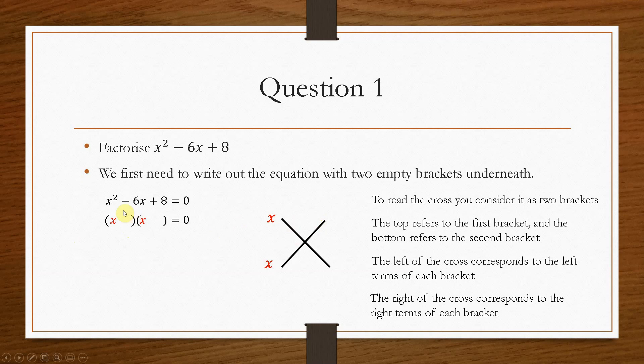In this case, we need two numbers which will multiply to give you plus 8, but add together to give you minus 6. We're going to forget about the minus 6 for a minute and just consider what two numbers will times together to give you positive 8.